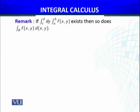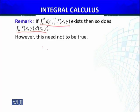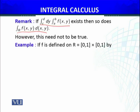So the remark is: if the iterated integral exists, then so does the integral of the function of two variables over the region R. However, this need not be true - if the iterated integral exists, it is not necessary that the integral of the function of two variables over the region R also exists.